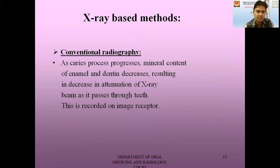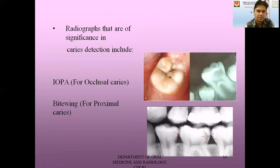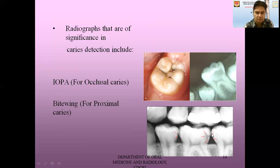Next method is the X-ray method. First, we have conventional radiography. As the caries process progresses, the mineral content of enamel and dentine decreases, resulting in decreased attenuation of the X-ray beam as it passes through the teeth, and this is recorded on the image receptor. Radiographs significant in caries include the intraoral periapical radiograph for occlusal caries and the bitewing radiograph for proximal caries. Here we can see occlusal caries on the periapical radiograph, and for proximal surface caries we use the bitewing, which shows proximal caries on the distoproximal surface of the lower molar.